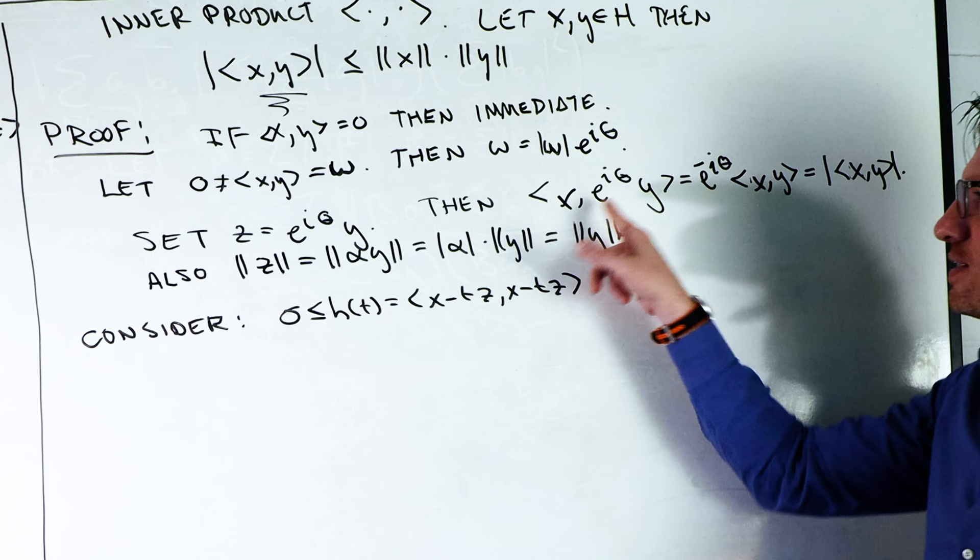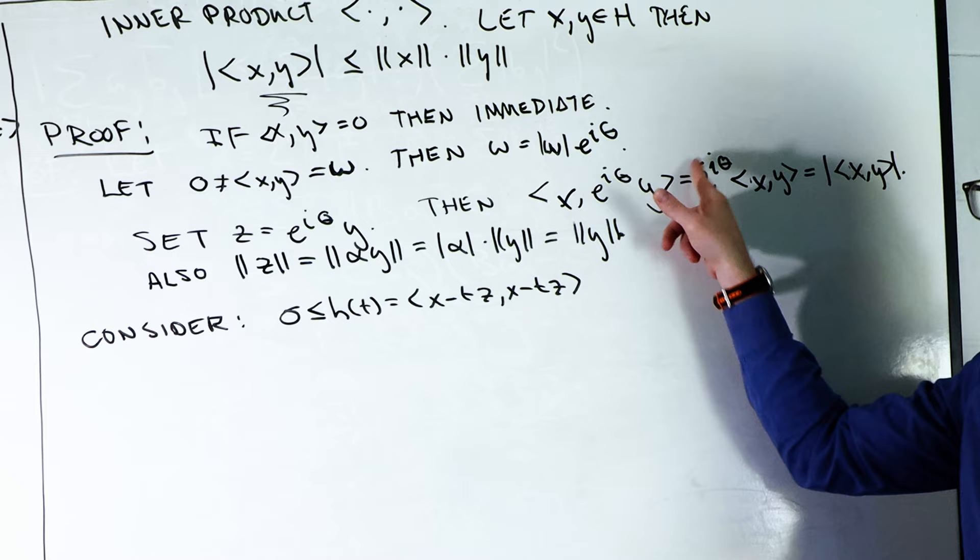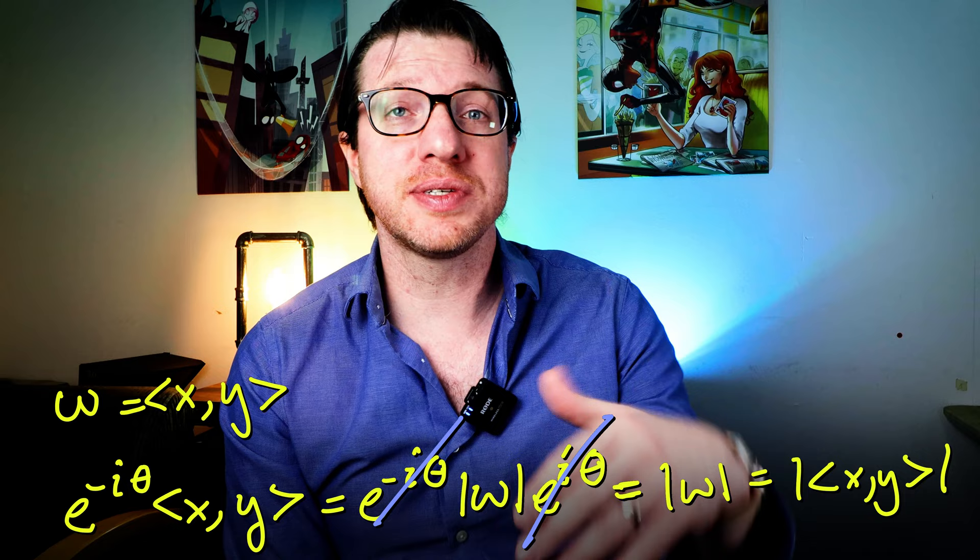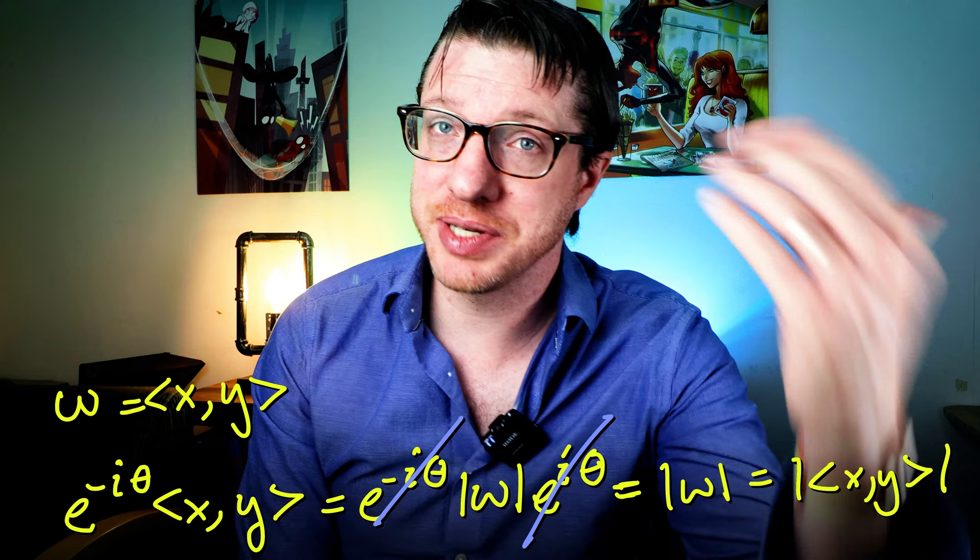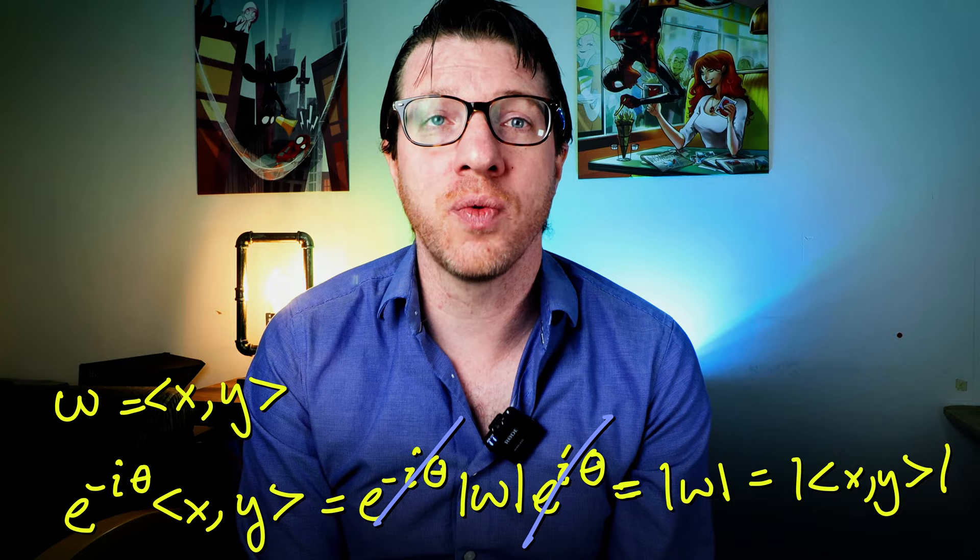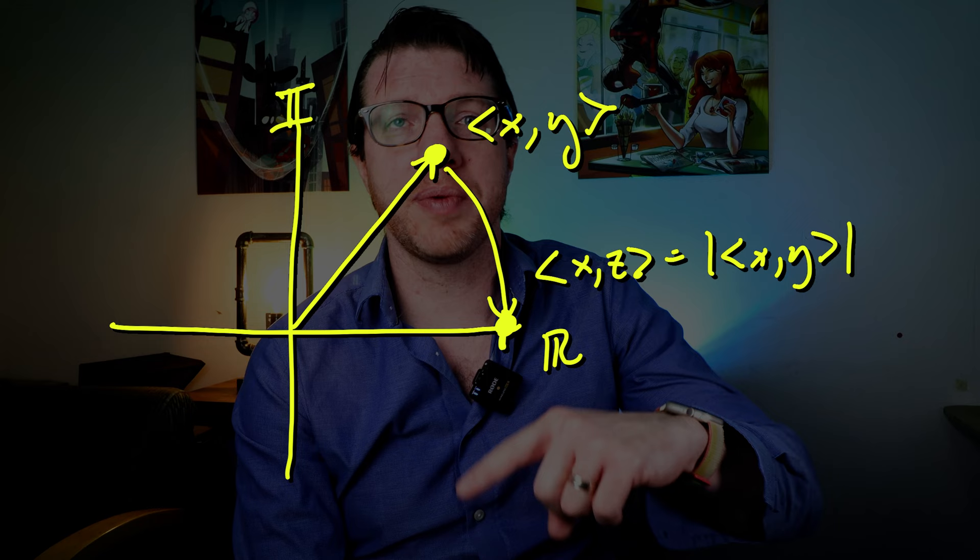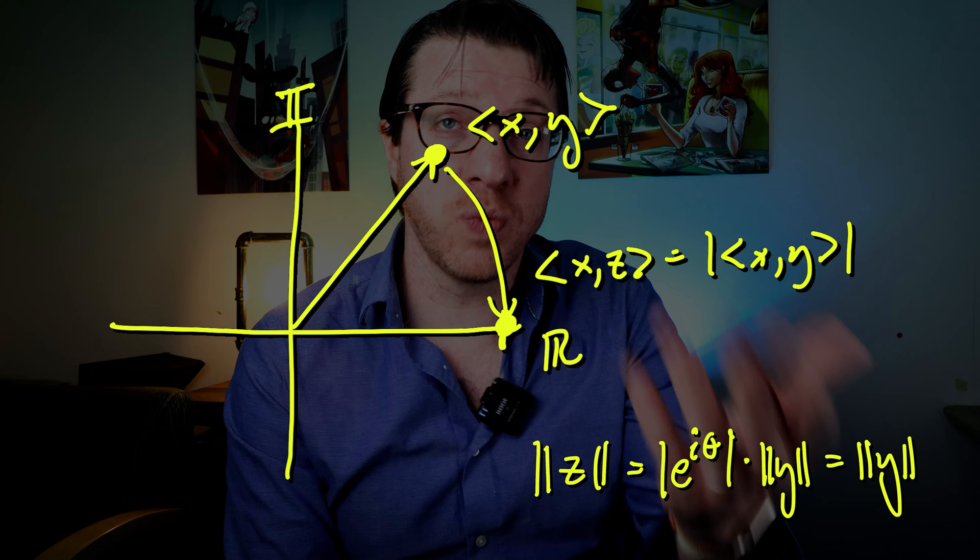So when you take x and you take this inner product with z, pull out this e^(iθ), and it's going to come out with a conjugate that puts a minus sign there. Now remember we called x inner product y the complex number w, and so this product becomes e^(-iθ) times the absolute value of w times e^(iθ), and the exponentials cancel. This leaves the absolute value of w or the absolute value of x inner product y. So the selection of z actually rotates the complex number x inner product y to point along the positive reals, and otherwise changes nothing.